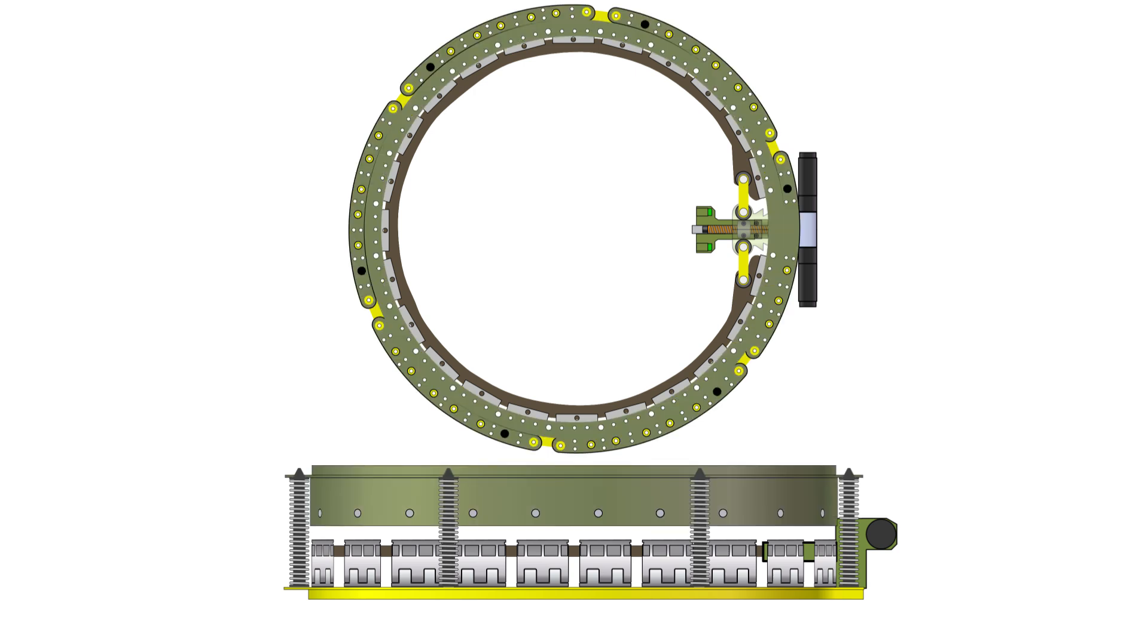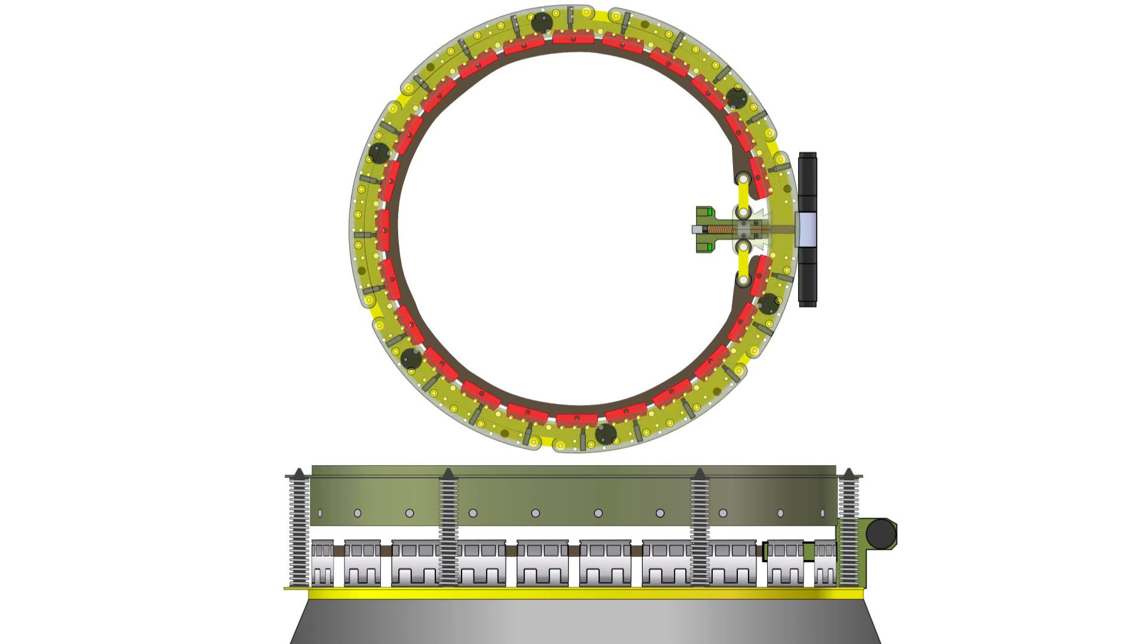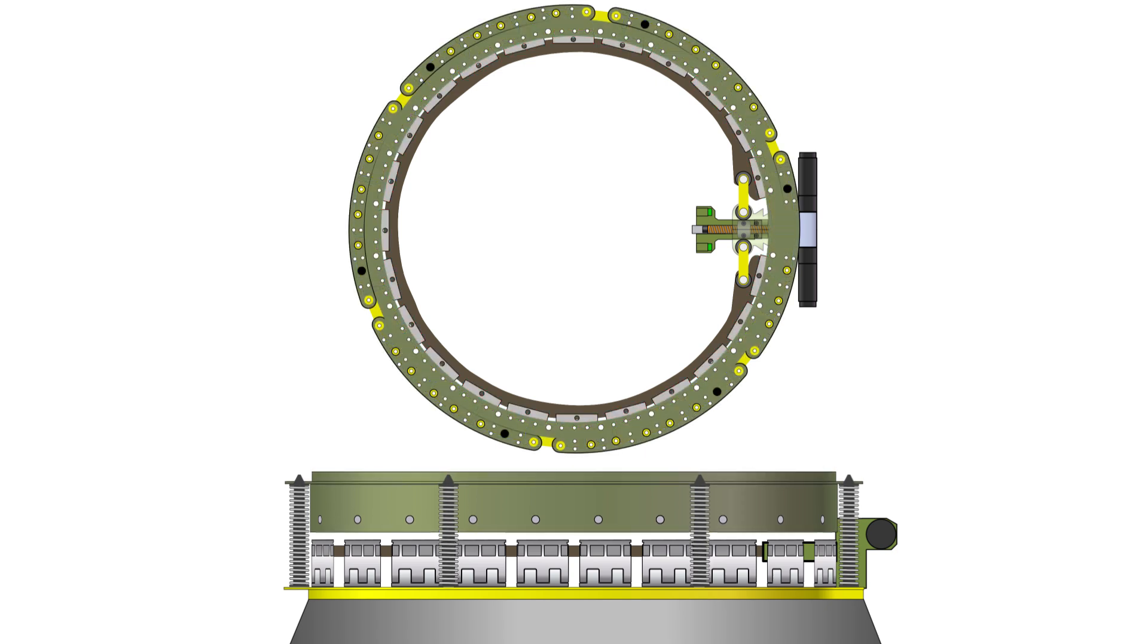The bottom frame is attached to the launch vehicle. It contains a set of engagement leaves placed in a circular pattern. The upper ring, which is attached to the payload, is then lowered on top of the bottom frame, compressing the separation springs until it covers the set of leaves.